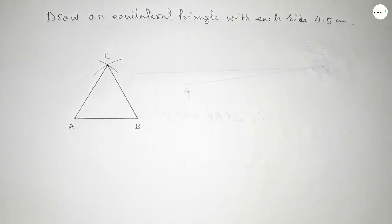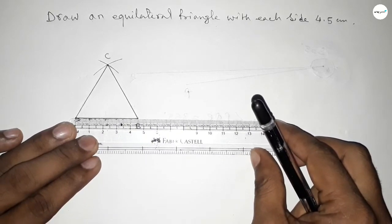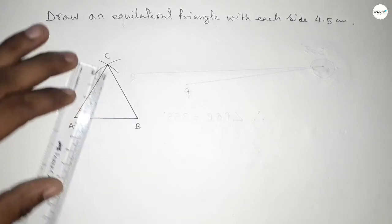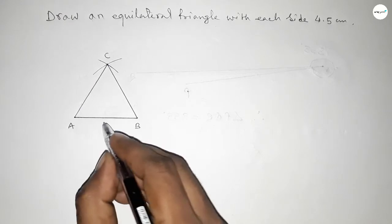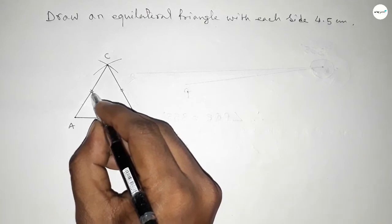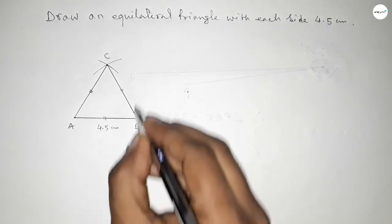Now checking all the sides. So this is 4.5 centimeters, this is also 4.5 centimeters, and this is also 4.5 centimeters. So now mark the equal sign on the side. This is 4.5 centimeters, this is 4.5 centimeters, and this is also 4.5 centimeters.